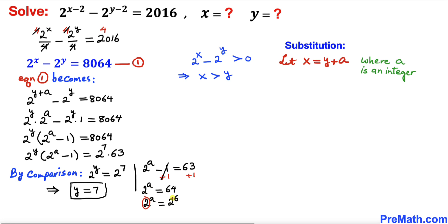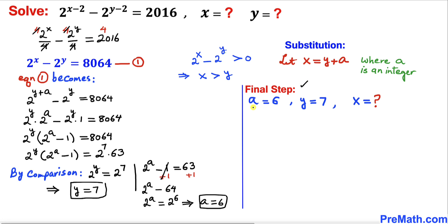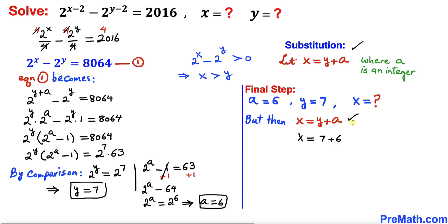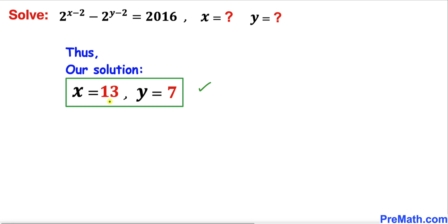Our bases on both sides are the same so we equate exponents: a equals 6. With y equals 7 and a equals 6, and from our substitution x equals y plus a, we get x equals 7 plus 6, which is 13. Thus our solution is x equals 13 and y equals 7. That's our final answer. Thanks for watching and please don't forget to subscribe to my channel for more exciting videos.